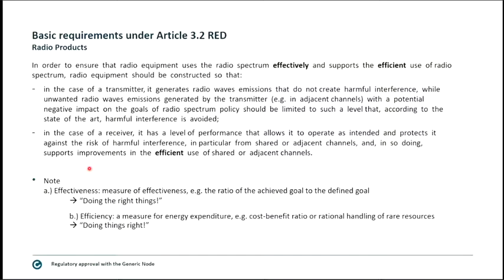In order to ensure that radio equipment uses radio spectrum effectively and supports efficient use of radio spectrum: in the case of a transmitter — meaning the device only sends and does not receive — it generates radio waves that must not create harmful interference with other devices also sending. For example, a Bluetooth mouse and a Bluetooth keyboard used in parallel must not conflict with each other. In the case of a receiver, it must have a level of performance that allows it to operate as intended, receiving the necessary information it was designed for without being influenced by anything else transmitting on the used channel.